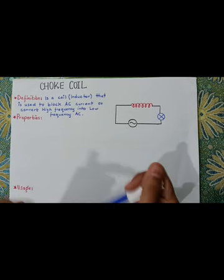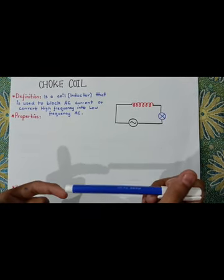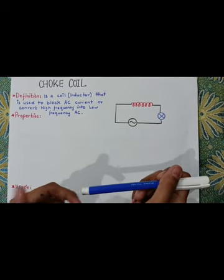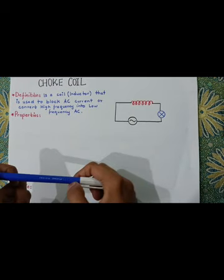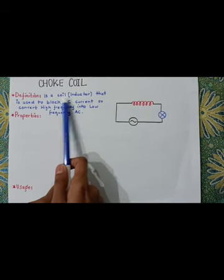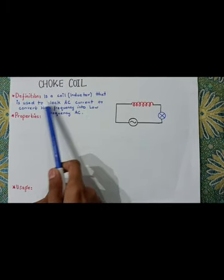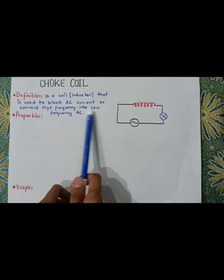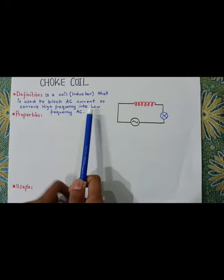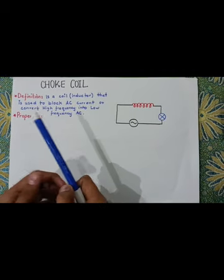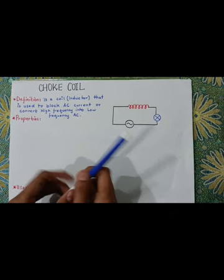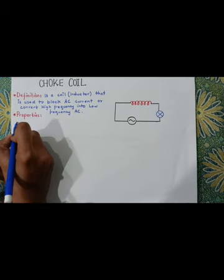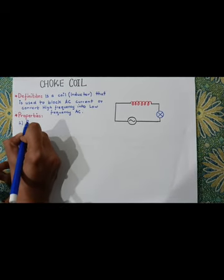Choke coil is a wounded coil that blocks AC current so that we can convert high frequency AC to low frequency AC. Choke coil is a coil or inductor that is used to block AC current and convert high frequency AC current into low frequency AC current.